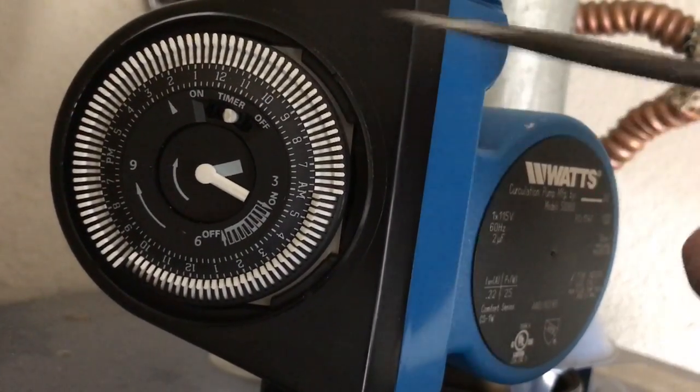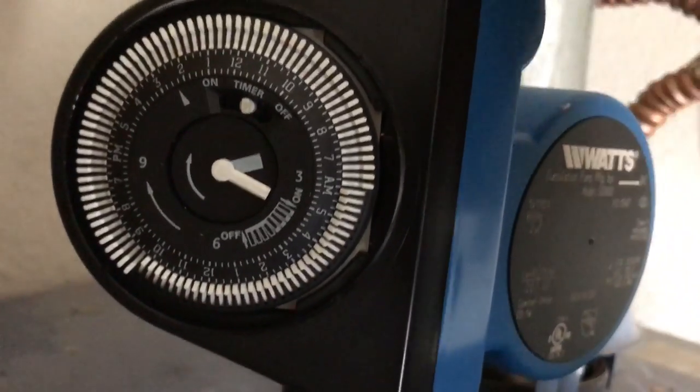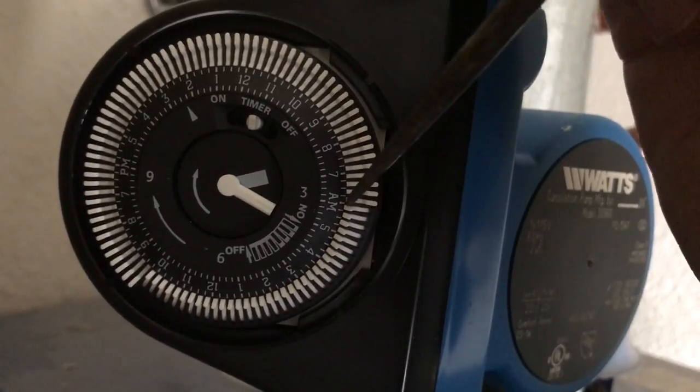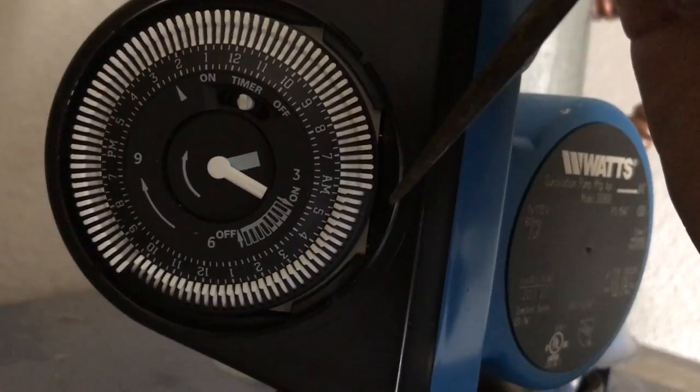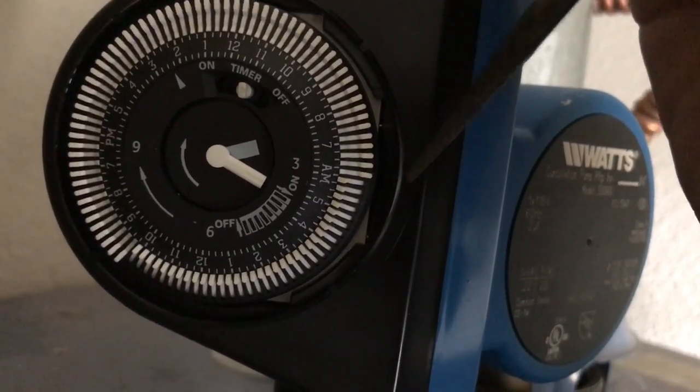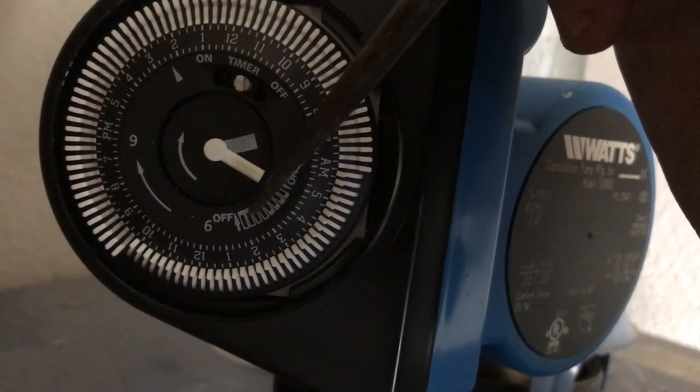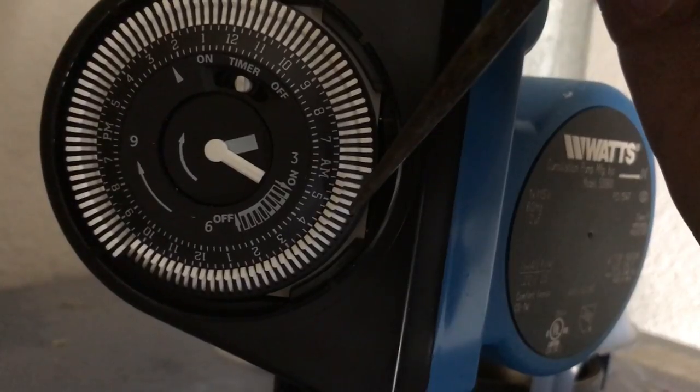So we have the timer selected. Now let's talk about how to set the on and off hours. The way this system works is we've got a series of pins here, these white pins. You can push them in towards the middle, or you can push them out towards the outside. If you push them in towards the middle, it's off, and it tells you that right here. So if you push it in, it's an off hour, and if you push it towards the outside, it's an on hour.